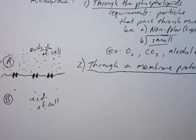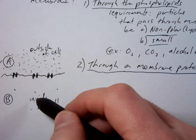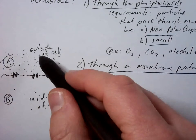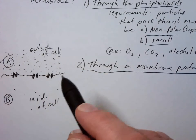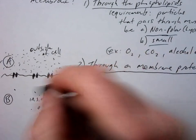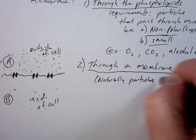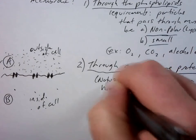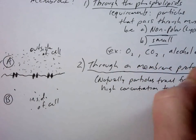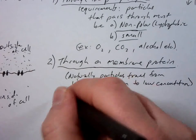If we open these gates up right here, where are those particles naturally going to go? From A to B or B to A? These particles here will go from A to B because there's more particles in A. Naturally, they're going to move. Note: naturally, particles travel from high concentration to low concentration. And if they do that through a protein, that's called passive transport.